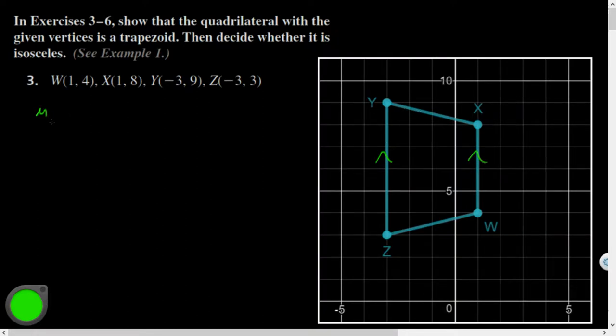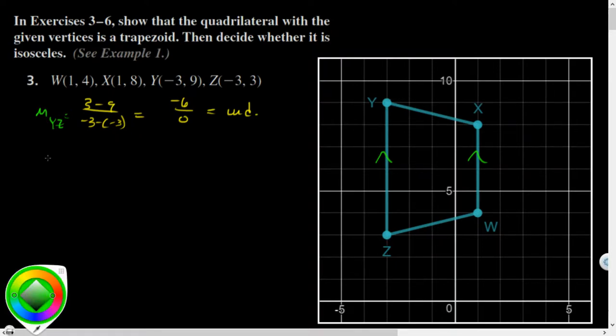If I did find the slope of, say, YZ, this one's got a lot of formulas because of the coordinate geometry. The slope of YZ would be something like 3 minus 9 over negative 3 minus negative 3. And we'll see that 0 will appear in the denominator. And that is undefined. And both of those have undefined slopes. They are parallel to each other. We would have to also show that these are not parallel to each other. Because if those happen to be parallel, it would be a parallelogram, which is not a trapezoid.